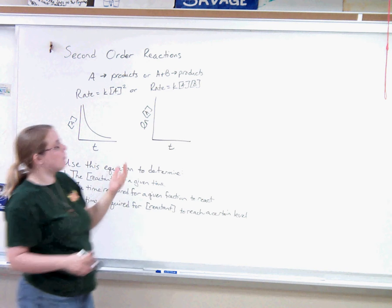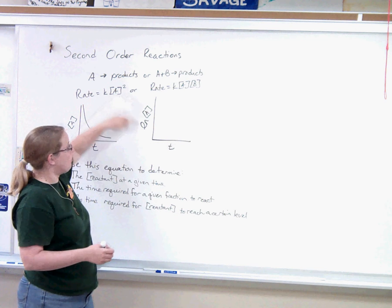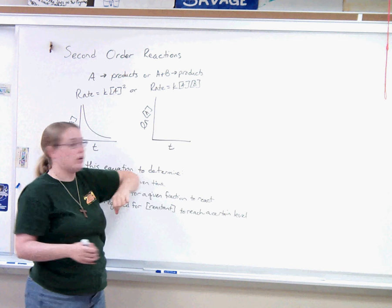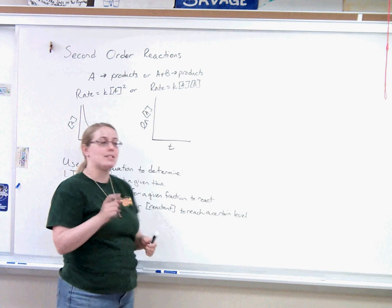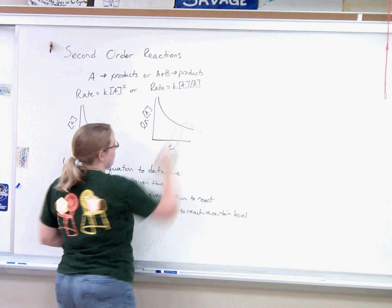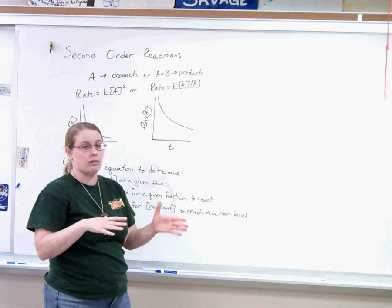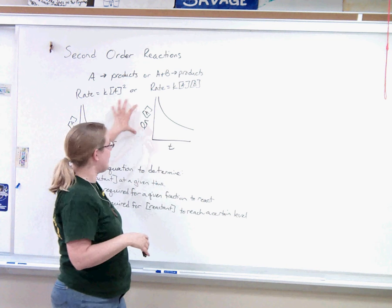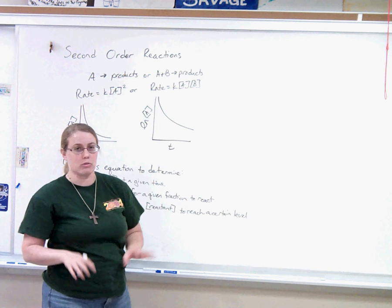We talked about in the first-order reaction video that if it was first-order, you could plot the natural log of the concentration and get a straight line. Now, if you did that with a second-order reaction, you would still get a curve. That's how you can tell the difference between first-order and second-order reactions. If you plot the natural log of the concentration and it gives you a curve, it's not first-order, it's second-order.